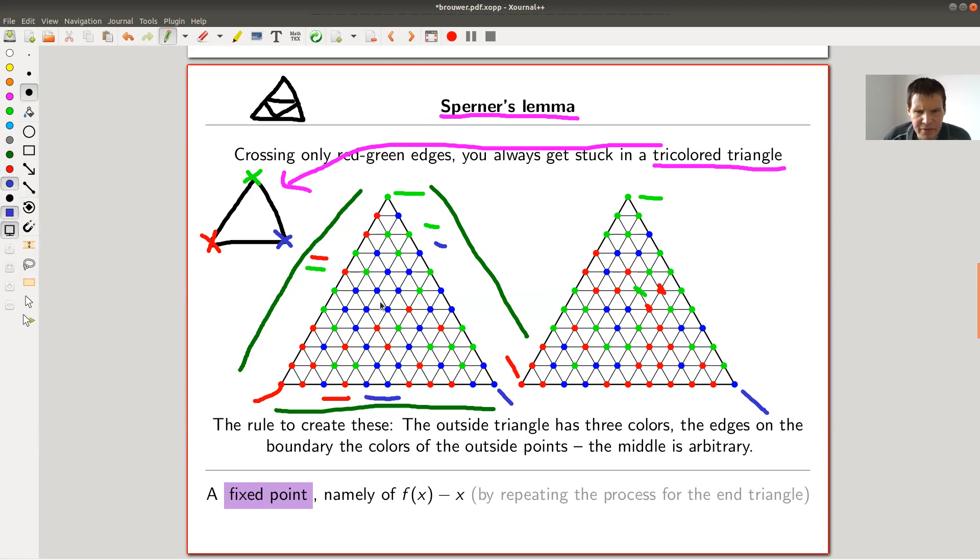So here, for example, is a completely black, a completely blue triangle. So in the middle, it's arbitrary. And Sperner's lemma is now the following game. So you start, so you have one allowed move. You have an edge, and you're allowed to cross it if and only if the edges are red and green.